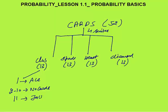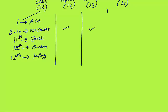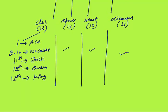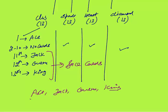In each suit: the 1st card is the Ace, cards 2 to 10 are called number cards, the 11th card is Jack, the 12th card is Queen, and the 13th card is King. Jack, Queen, and King are called face cards. The combination of Ace, Jack, Queen, and King together are called honour cards (H-O-N-O-U-R).